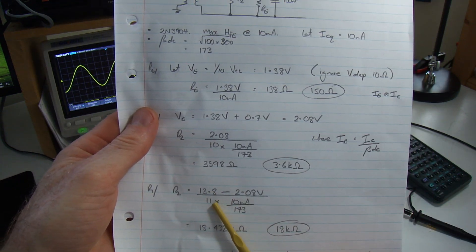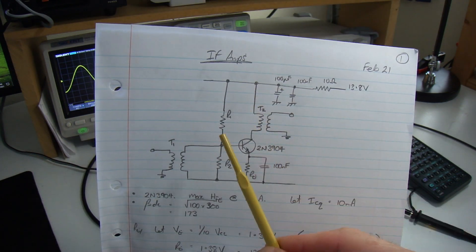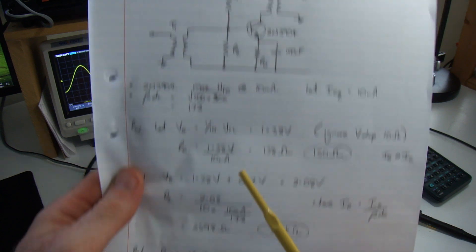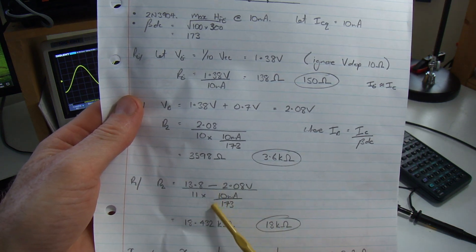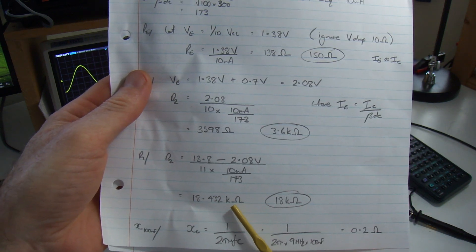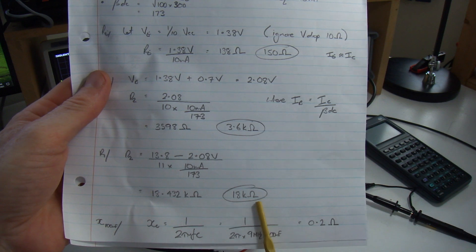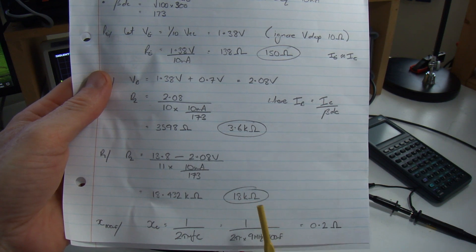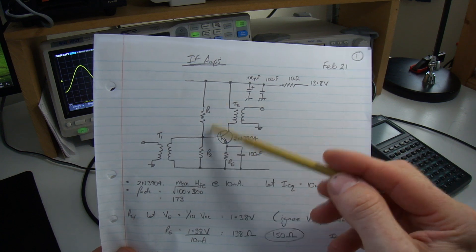I've got a small 10 ohm decoupling resistor between the VCC line and the supply. 10 milliamps times 10 ohms is only 0.1 volts, so I'm going to ignore the voltage drop across that in these calculations. So 13.8 volts minus 2.08 divided by 11 times our base current comes out at 18.432 kilo ohms, so I'm going to use 18k ohms. Now we've worked out our 1, 2, 3 biasing resistors.